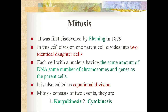Mitosis was first discovered by Fleming in 1879. In this cell division, one parent cell divides into two identical daughter cells possessing the same amount of DNA, same number of chromosomes and genes as the parent cell. That's why it is also called equational division. Mitosis consists of two events: karyokinesis (nuclear division) and cytokinesis (cytoplasm division).